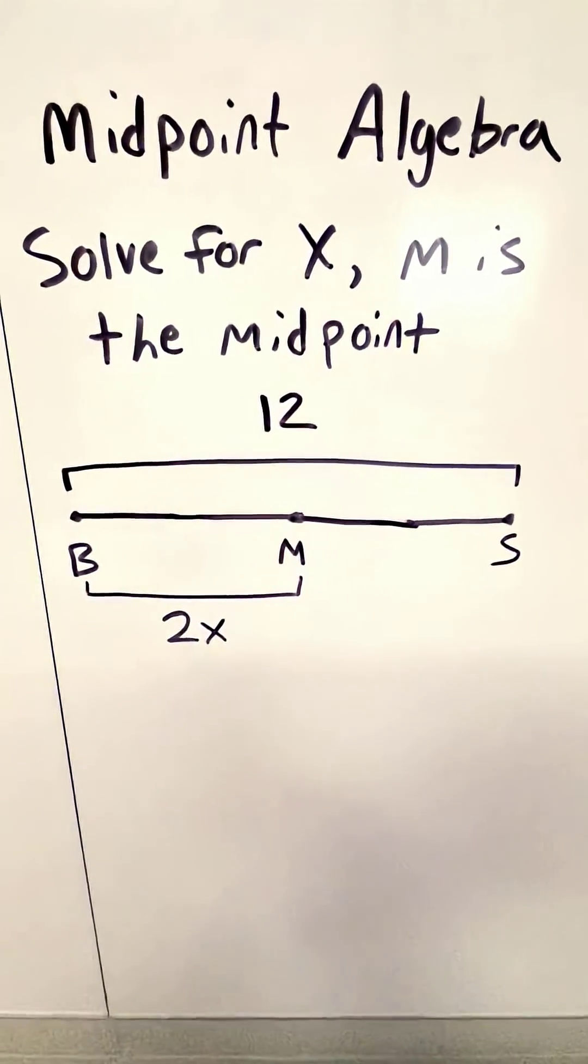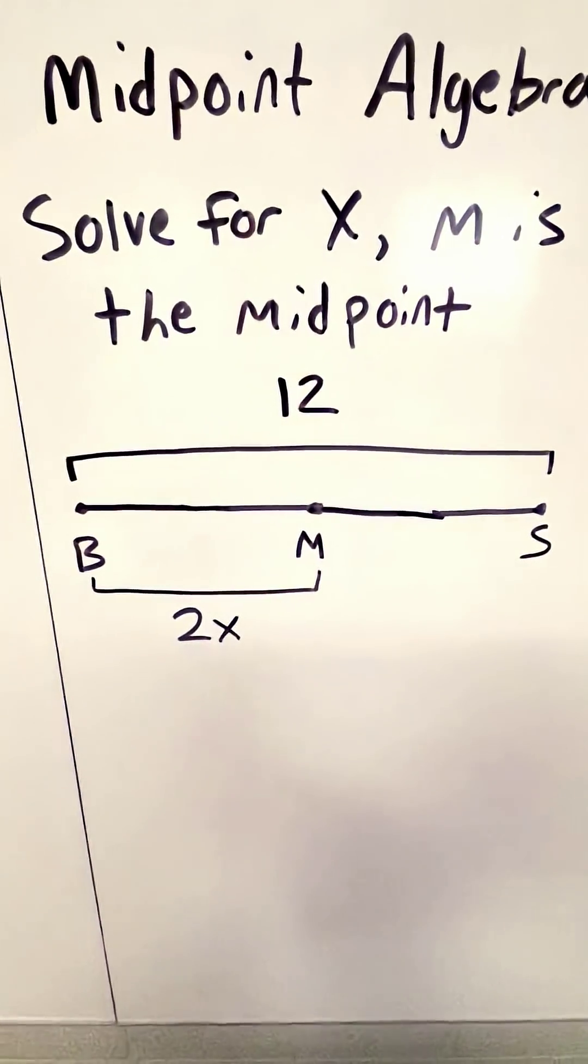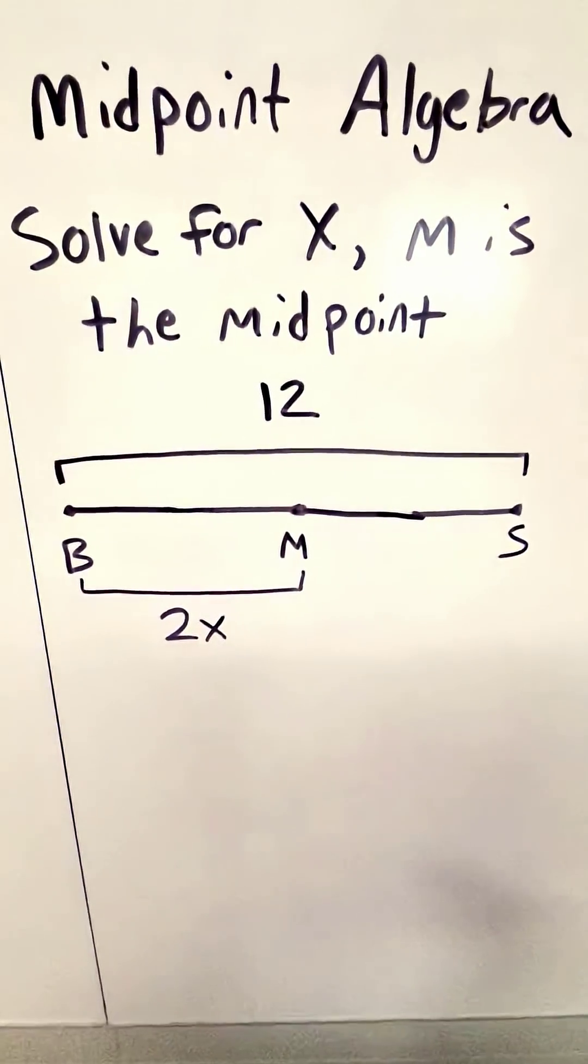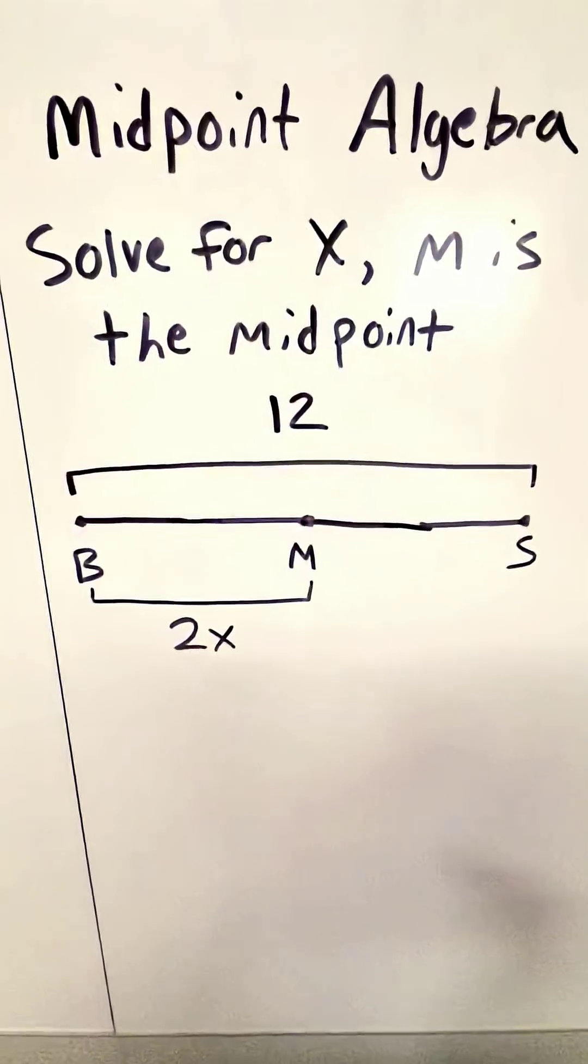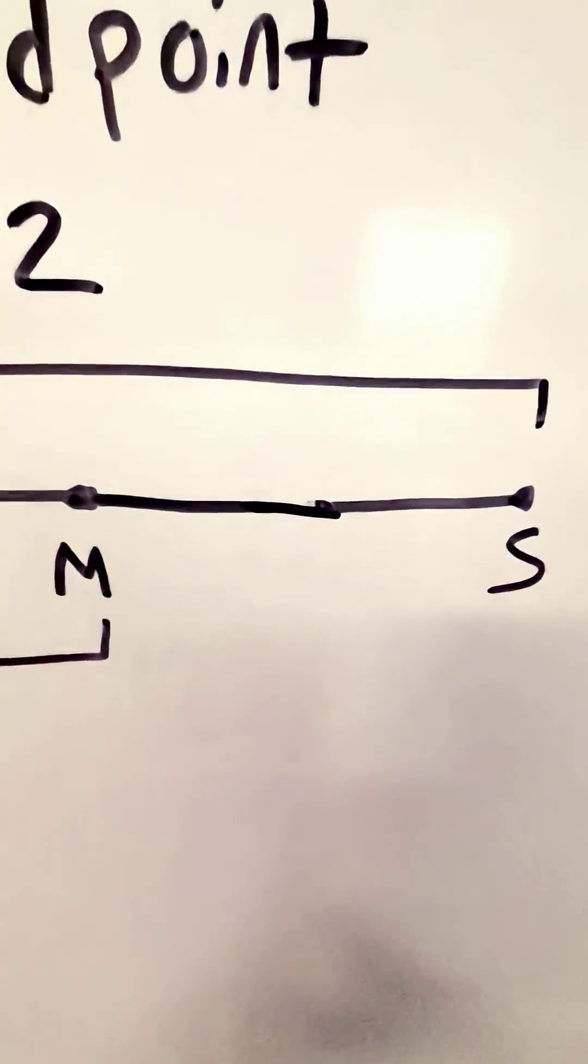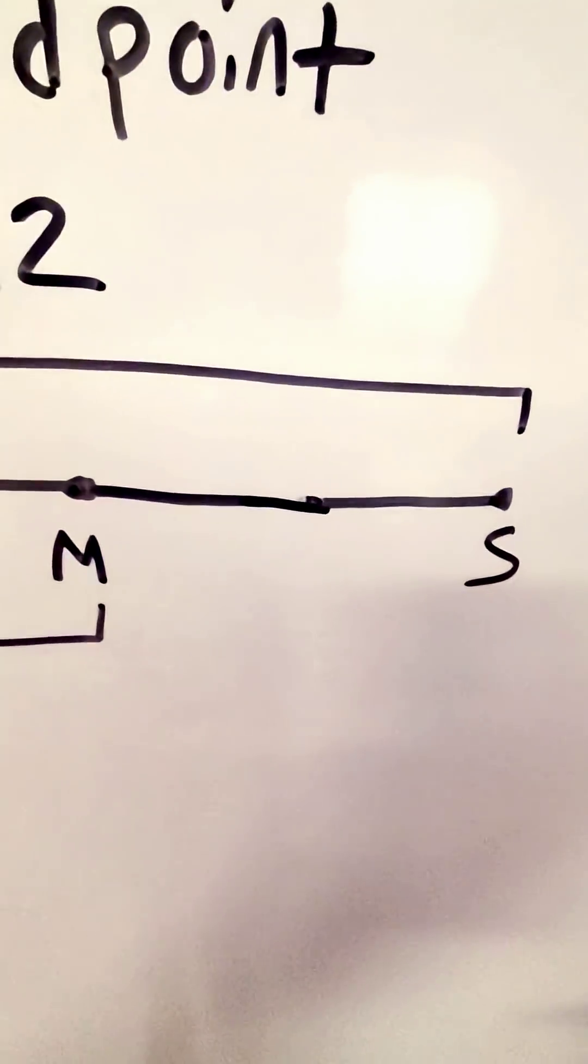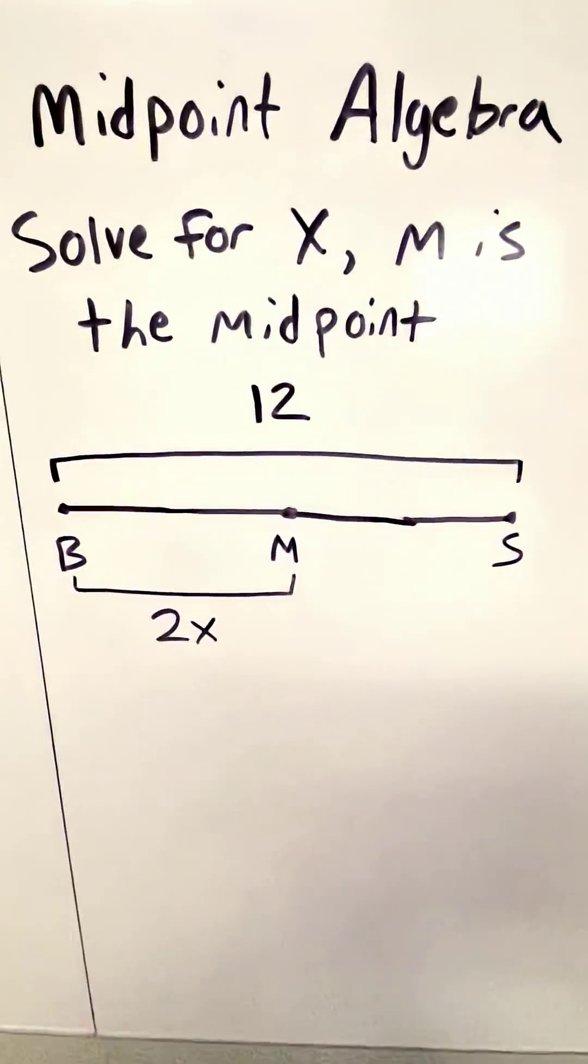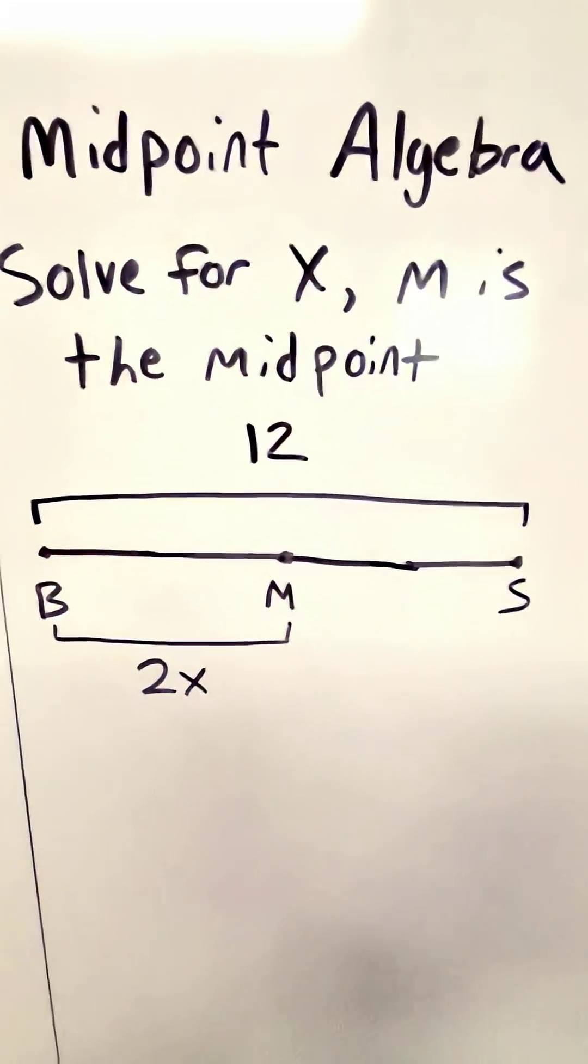What if we had a different scenario? Now we know the entire length and we only know one of the parts. Take a second, think about it. How could we figure out what the length of MS is? It could have a variable in it. We need to use the fact that we know that M is our midpoint.